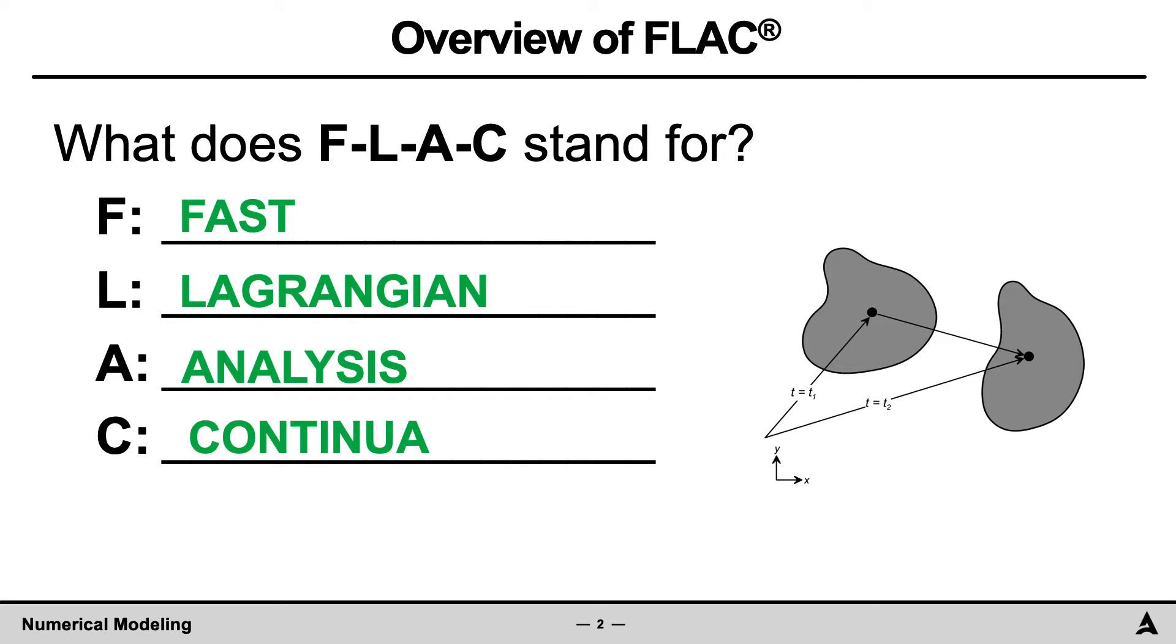Lagrangian defines how we characterize the motion. In a Lagrangian description, we focus on the motion with respect to the material coordinates and time. This is highlighted by the figure to the right, where the movement of the body is a focus from time t1 to time t2.